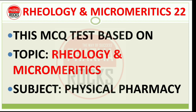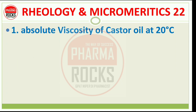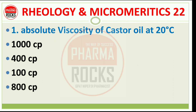MCQ test number 22 with proper solution and explanation, topic rheology and micromeretics from subject physical pharmacy. Question number 1: What is the absolute viscosity of castor oil at 20 degrees Celsius? Four different options are given: 1400, 100, and 8800 CP — CP means centipoise.